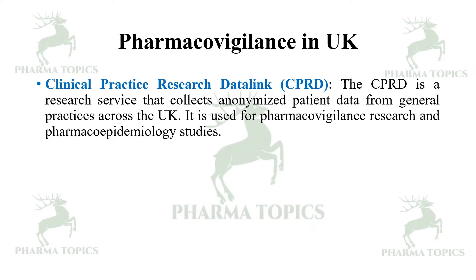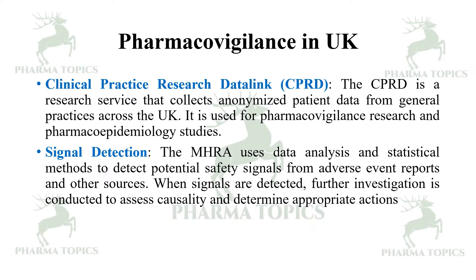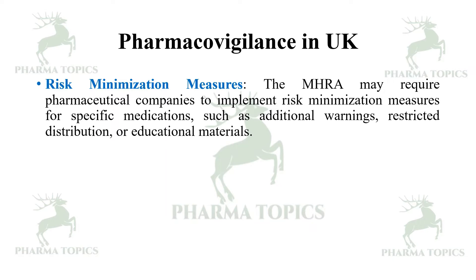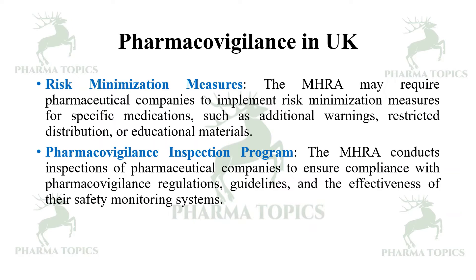The Clinical Practice Research Datalink (CPRD) is a research service that collects anonymized patient data from general practices across the UK, used for pharmacovigilance research and pharmacoepidemiology studies. The MHRA uses data analysis and statistical methods to detect potential safety signals from adverse event reports and other sources; when signals are detected, further investigation is conducted to assess causality and determine appropriate actions. The MHRA may require pharmaceutical companies to implement risk minimization measures for specific medications, such as additional warnings, restricted distribution, or educational materials. The MHRA also conducts inspections of pharmaceutical companies to ensure compliance with pharmaceutical regulations and the effectiveness of their safety monitoring programs.